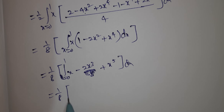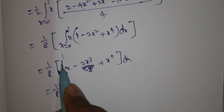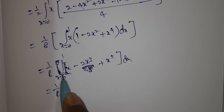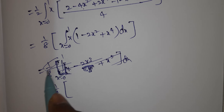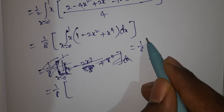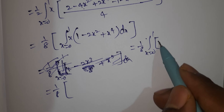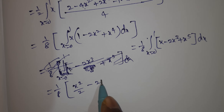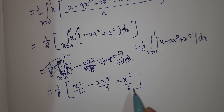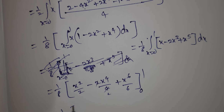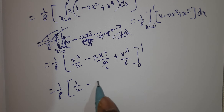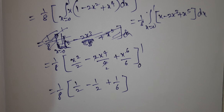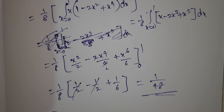Expanding: integral of (x - 2x³ + x⁵) dx = x²/2 - 2x⁴/4 + x⁶/6, evaluated from 0 to 1. Applying upper limit 1: 1/2 - 1/2 + 1/6 = 1/6. Lower limit gives 0. So the answer equals 1/8 × 1/6 = 1/48. Please like, share, and subscribe to my channel. Thank you.